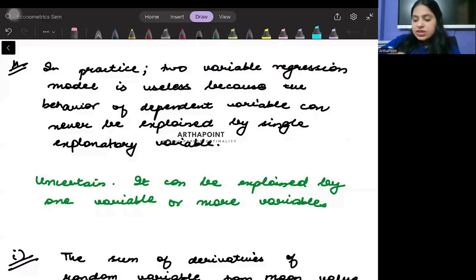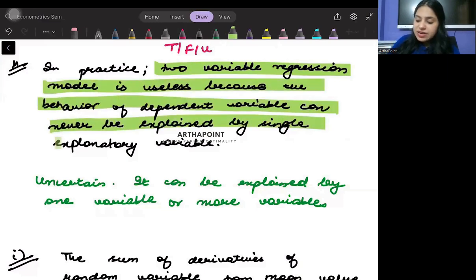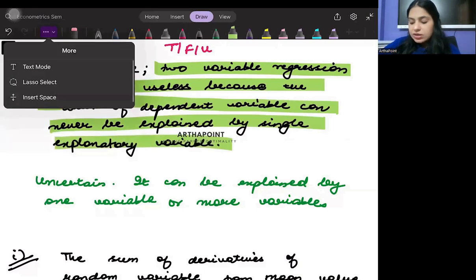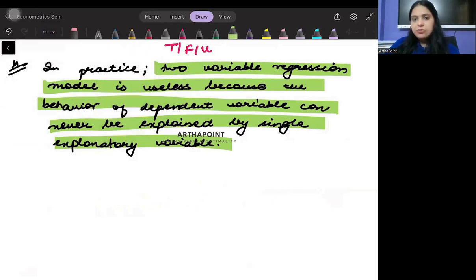Okay, let's look into the statement again. We need to tell whether it is true, false, or uncertain. This is saying in practice, two variable regression model is useless because the behavior of dependent variable can never be explained by a single explanatory variable. Well, in this case I won't say that this is true. I won't say it is false. I will say it is an uncertain statement. The answer is that sometimes it may be true and sometimes it may be false.